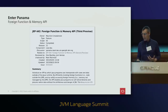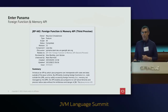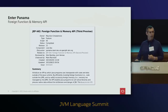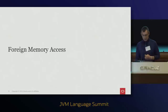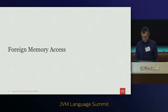What we came up with is a new Java SE API called the Foreign Function and Memory API. This has been a preview API for quite a while — we are at the third preview — and we believe it is ready to be made a final API in Java 22. Let's look at what's inside the FFM API.